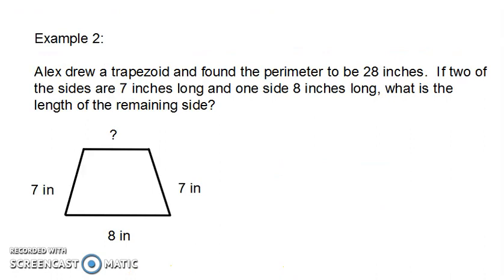Let's look at another example. Alex drew a trapezoid and found the perimeter to be 28 inches. If two of the sides are 7 inches long and one side 8 inches long, what is the length of the remaining side?